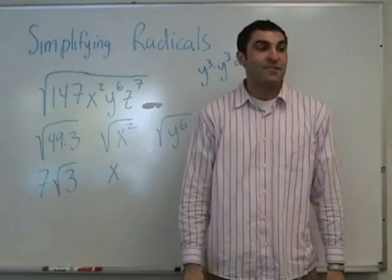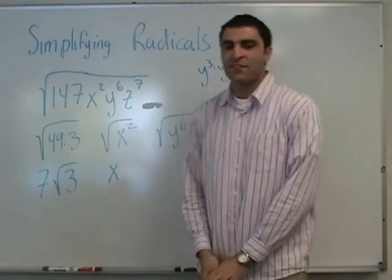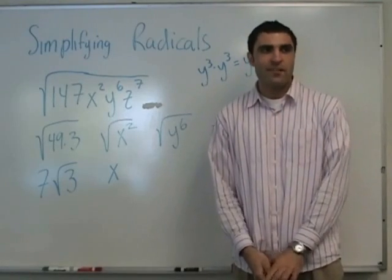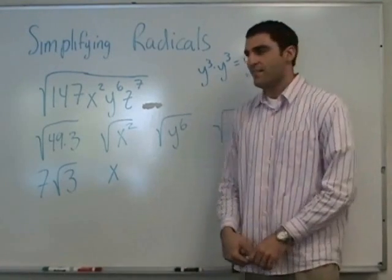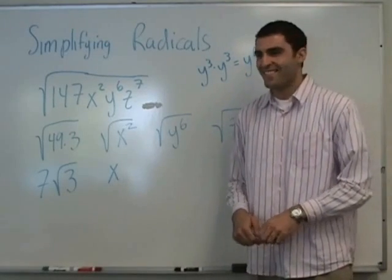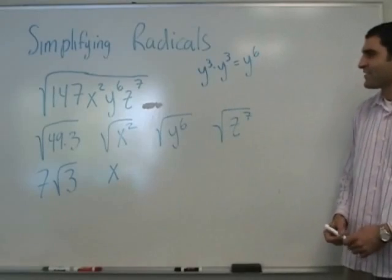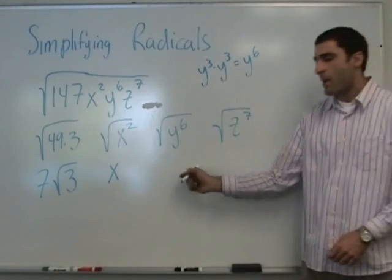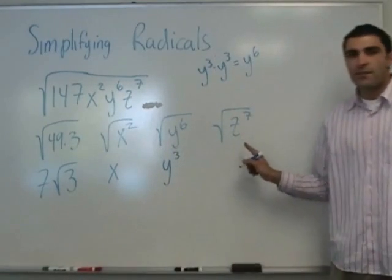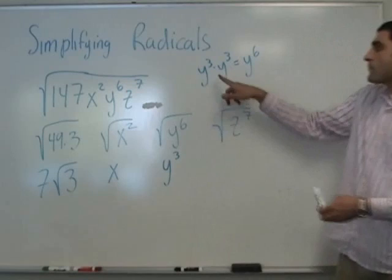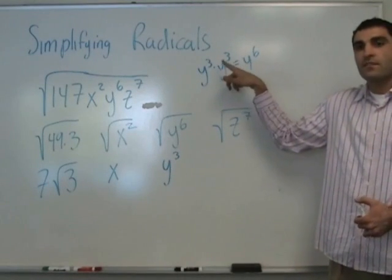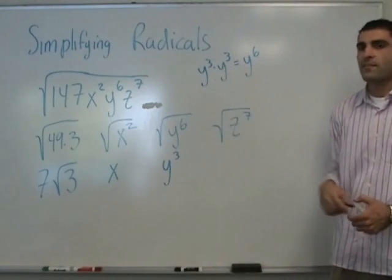We're back. We had a little issue with the battery — technical difficulties — but I'm a trooper. So, the square root of y to the 6th is y cubed. Any questions? y cubed times y cubed is y to the 6th — remember the rule for adding exponents. That's what it means.